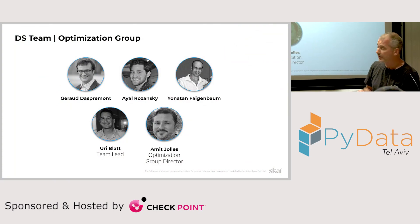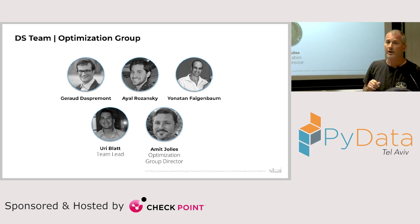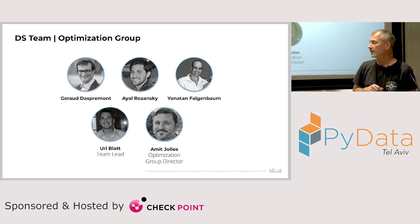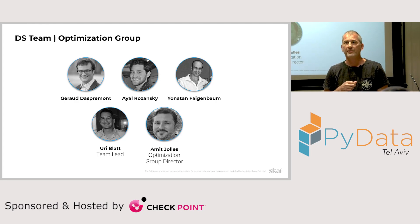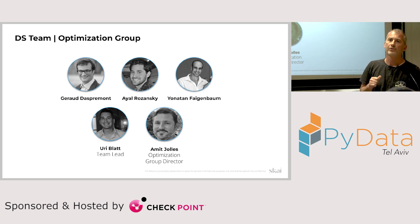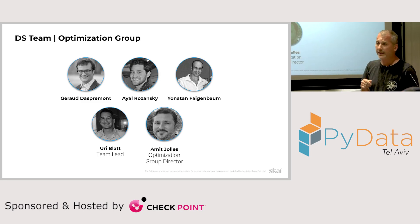Before we dive into the problem, just to introduce the team. I'm a data science team lead, a team of four. On this project, three team members worked on it: Jero, Ayal, and Yonatan — Yonatan is even here. We're part of a wider optimization and insights group managed by Amit Yulis. Within our responsibilities, we handle most of the optimization tools in Sky, covering digital marketing management — bids, budgets, forecasting, and long-term planning.